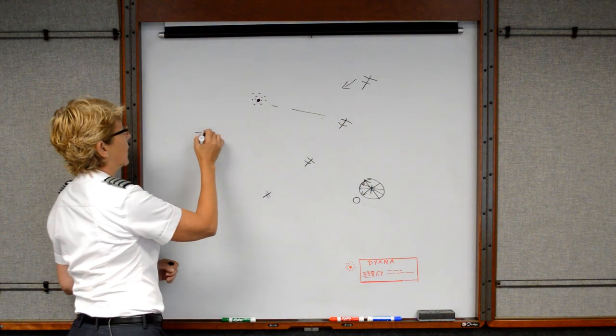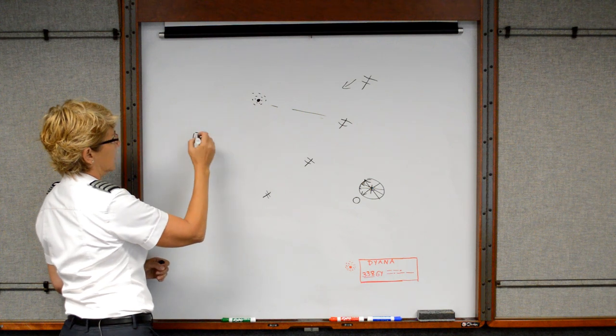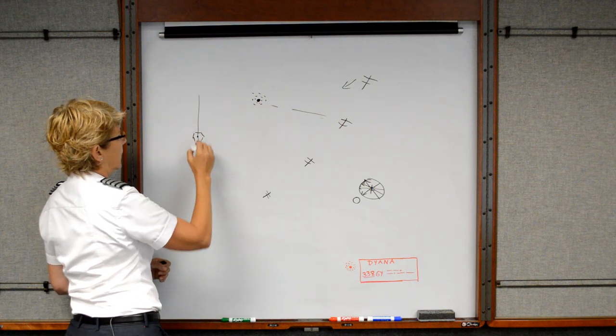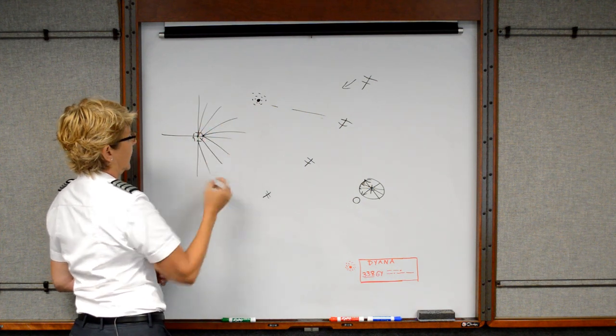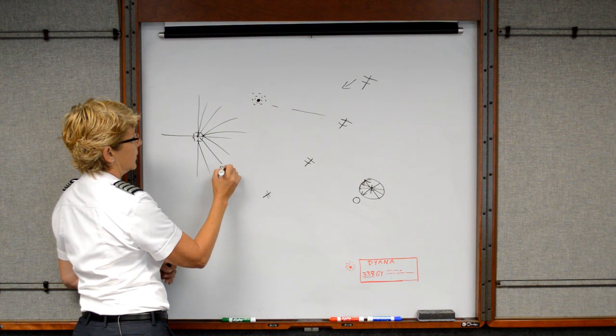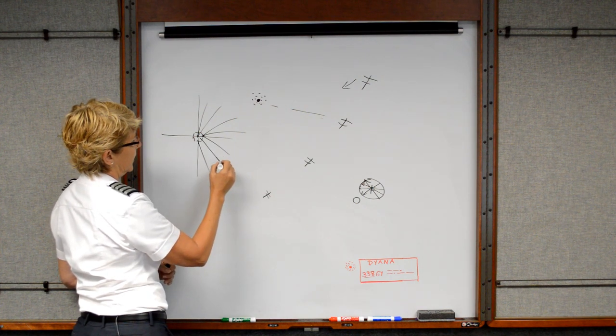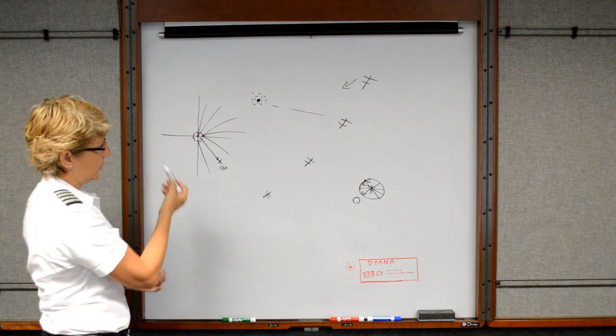When we're talking about a VOR, the VORs have 360 degree radials as we discussed earlier. So we have 360 distinct radials coming off of the VOR, and then we can choose one. For example, let's say we chose the 120, and I wanted to fly away from the station on that particular radial, or maybe you want to fly to the station.